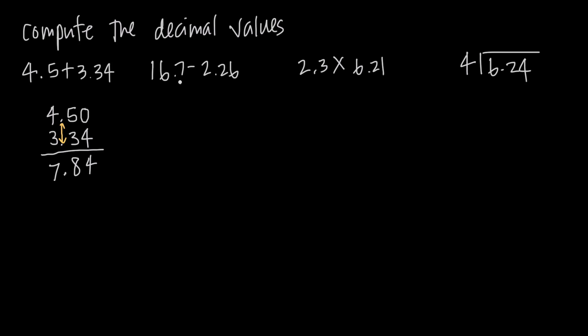We do the same thing when we have subtraction. So here we have 16.7 minus 2.26. So we want to make sure we line up our decimal places. So we're going to put 2.26 in here. Make sure our decimal places line up like this.